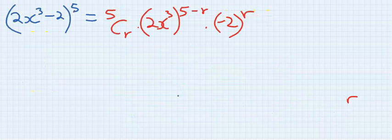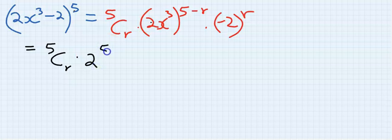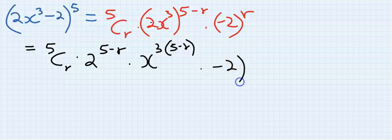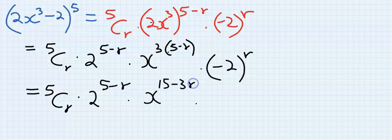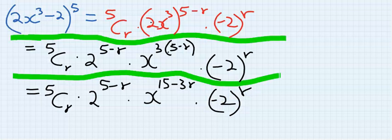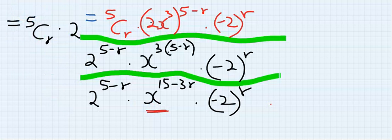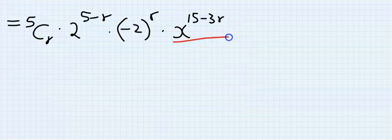So we have 5Cr · 2^(5−r) · x^(3(5−r)) · (−2)^r. I can expand this further to be 5Cr · 2^(5−r) · x^(15−3r) · (−2)^r. Next, I will rearrange these so that x comes to the back, and this is the rearranged expression.